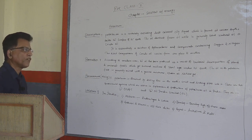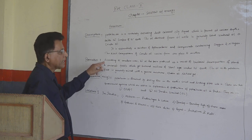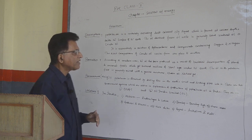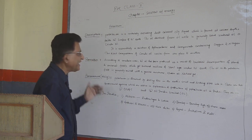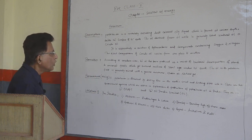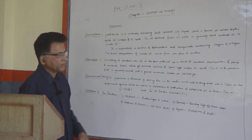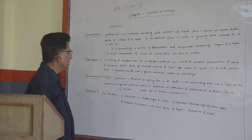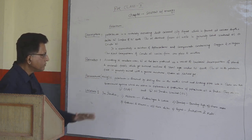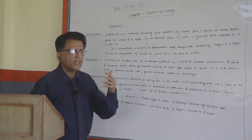Second, Formation. According to modern view, the oil has been produced as a result of bacterial decomposition of plants and animals fossils which got buried millions of years ago under the earth. The oil in the petroleum field is generally mixed with gaseous mixtures known as natural gas.